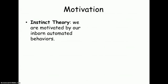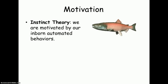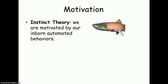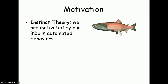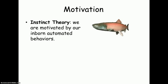So instinct theory comes from Darwin. This theory is that we are motivated by our inborn automated behaviors — motivation is something that's unlearned and passed down from generation to generation. Think about salmon: every year they travel hundreds of miles upstream, lay down eggs and sperm, and then die. Their dead carcasses help feed their young when they hatch.